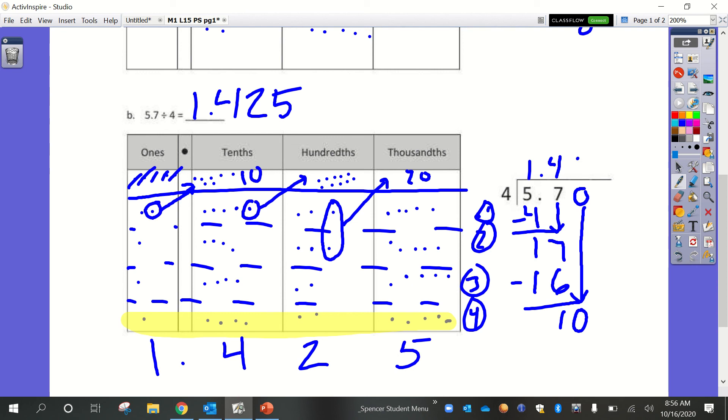We need to decompose into our hundredths so we have to represent our hundredths with the zero. Decompose it to now start working with ten hundredths. Same thing, 10 divided by four we can take two groups of that, that would give us eight. We're going to have two remaining hundredths which means we need to regroup and decompose into our thousandths. We're now working with twenty thousandths. We know four groups of five gives us 20 and that would give us zero remaining. So our answer, our quotient, is one and four hundred twenty-five thousandths.